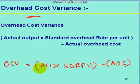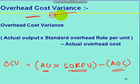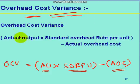So, here is actual output into standard overhead per unit minus actual overhead cost. This is nothing but the overhead cost variance formula.